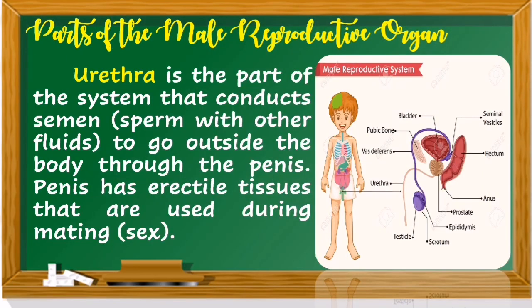The urethra is the part of the system that conducts semen or sperm with other fluids to go outside the body through the penis. The penis has erectile tissues that are used during mating or sexual intercourse.